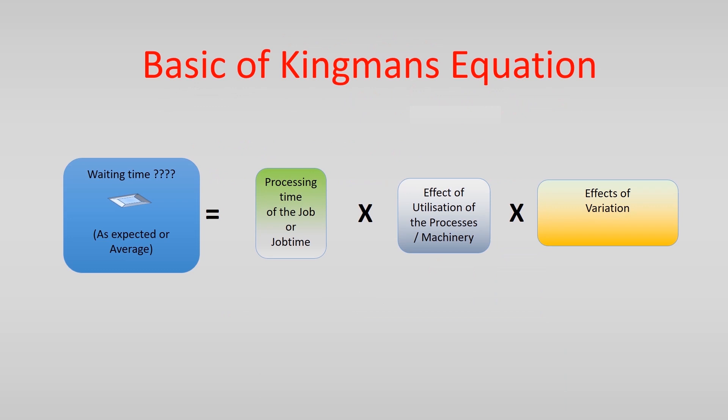So, let's look at what we already know. This is Kingman's equation and this states the parts that can make a mathematical calculation that makes an approximation of the expected mean waiting time in a queue.